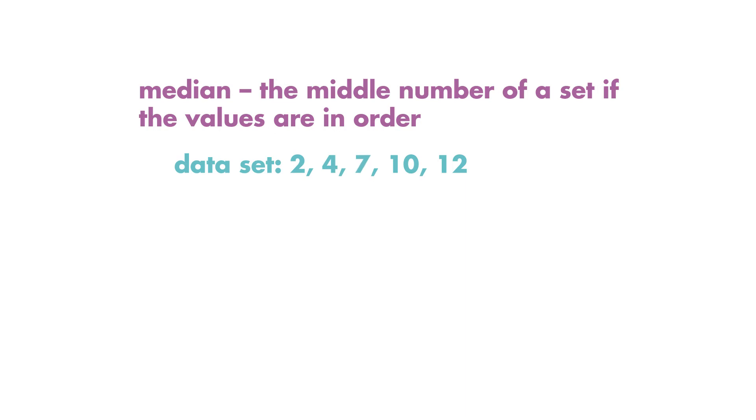If we have an even number of values, we find the mean of the two values in the middle. The median of this data set is 7.